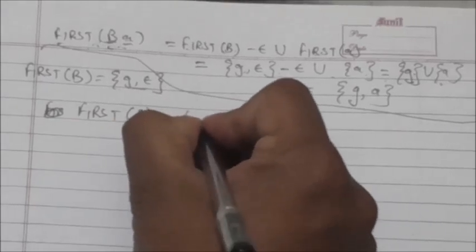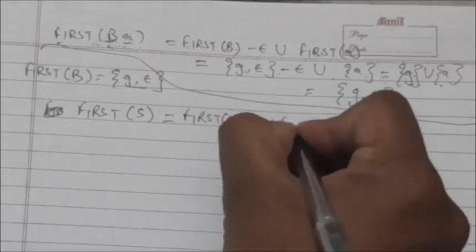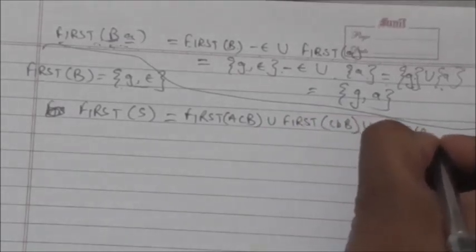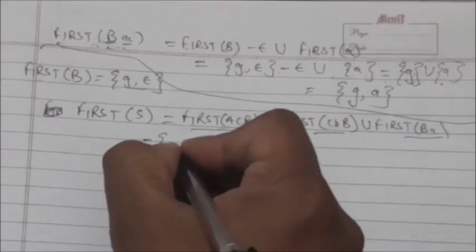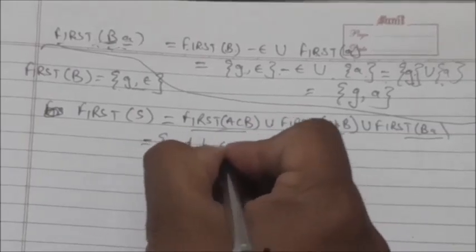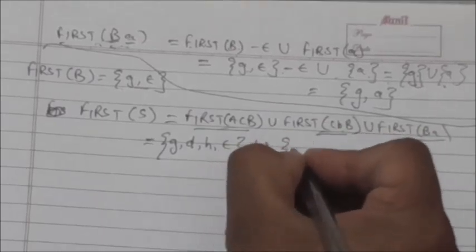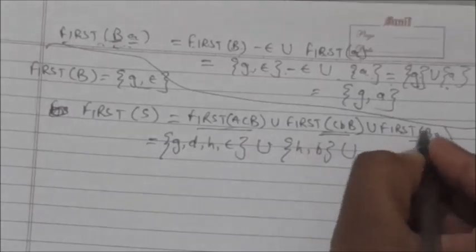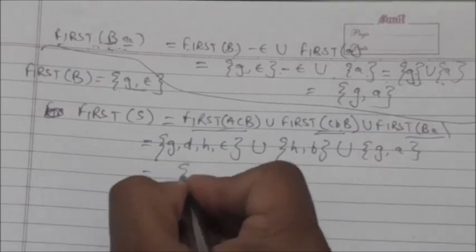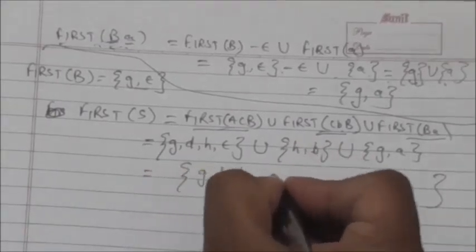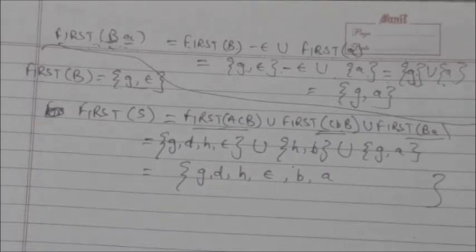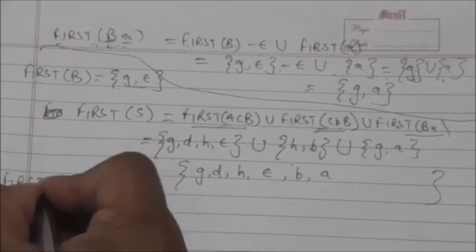So FIRST of S = FIRST of ACB union FIRST of CBB union FIRST of BA = {g, d, h, empty} union {h, b} union {g, a} = {g, d, h, empty, b, a}. I think it is clear after this example what FIRST is and how we can find the FIRST of any string alpha.